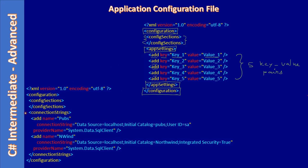Like app settings, we can also have connection strings. This is a separate configuration setting. Under app settings we can add application-related settings, and the connection string supplies database connection information to your desktop application. Under connection strings, you can also add specific entries using the add tag.